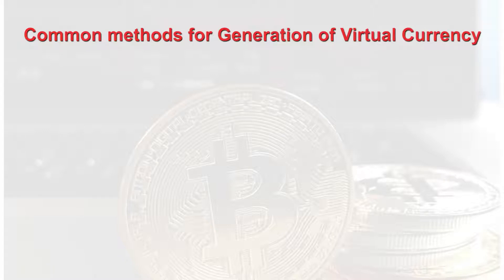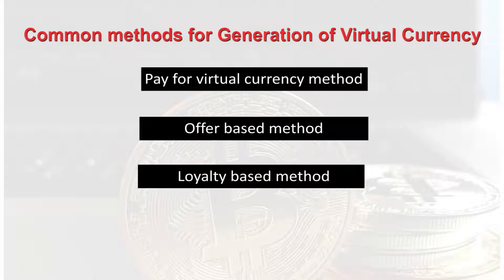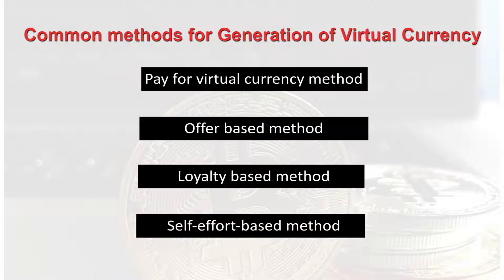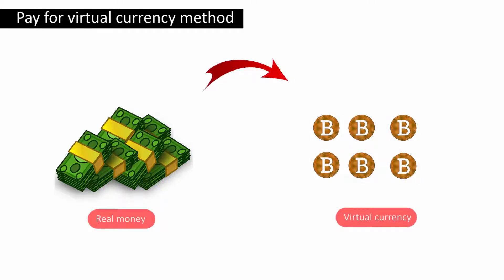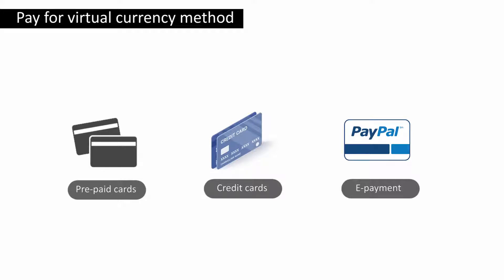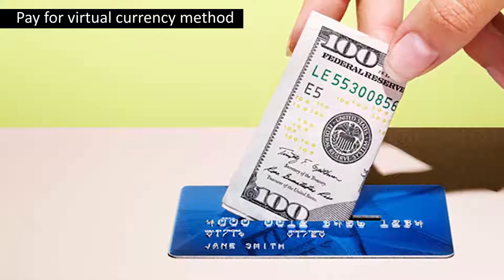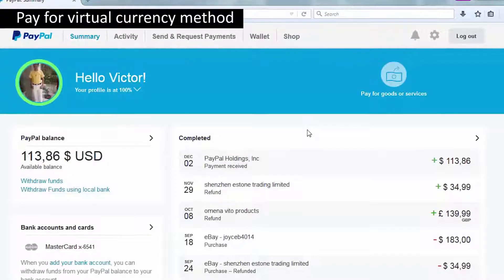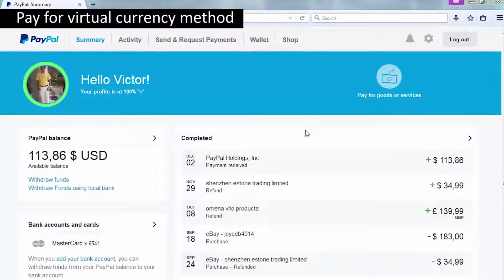Some common methods used here are: the pay for virtual currency method, the offer based method, the loyalty based method, and the self-effort based method. The pay for virtual currency method is used to pay real money or its equivalent monetary value in place of virtual currency. This may include prepaid cards, credit cards, or any e-payment systems such as PayPal. The amount of money purchased has its own complement price and exchange rate based on the type of virtual currency platform. The purchased virtual currency is stored in the buyer's account created within the platform by the operators.